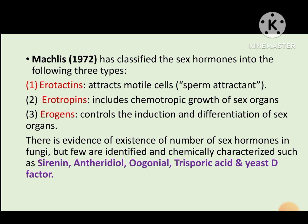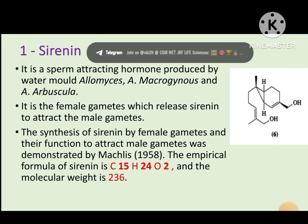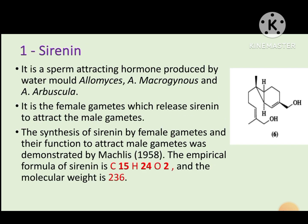There are various types of sex hormones identified in fungi: sirenine, theridione, oogoniol, trisporic acid, and the yeast alpha factor. Let's talk about each of these hormones one by one.